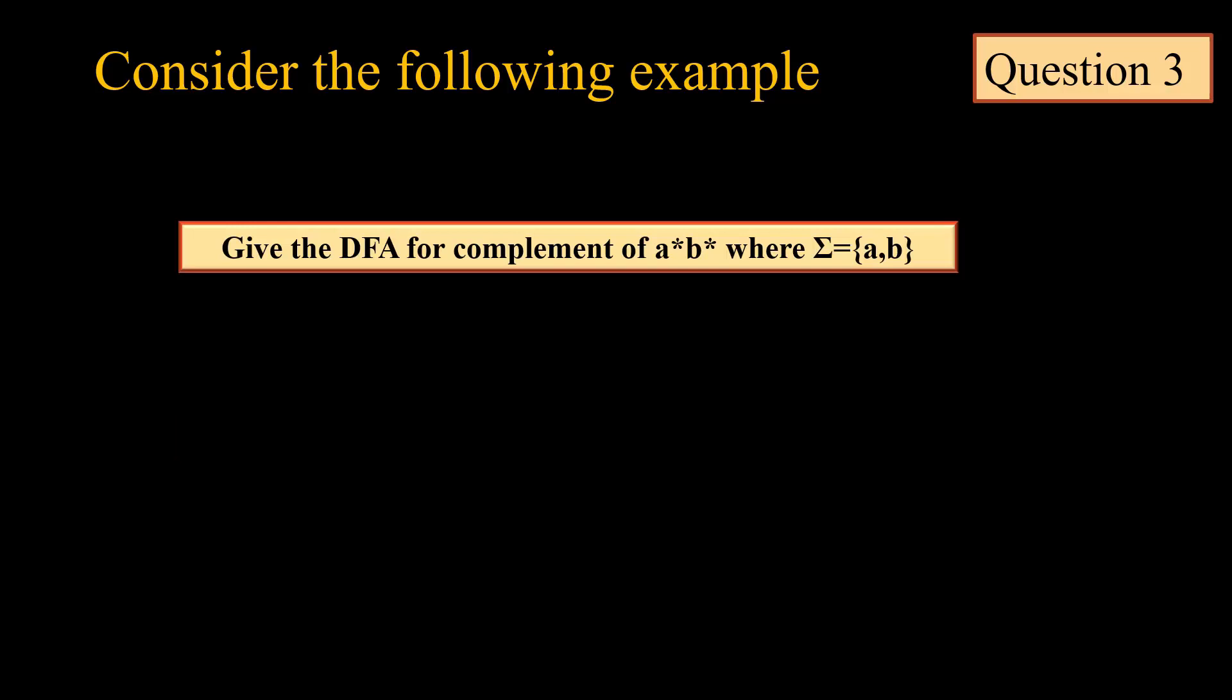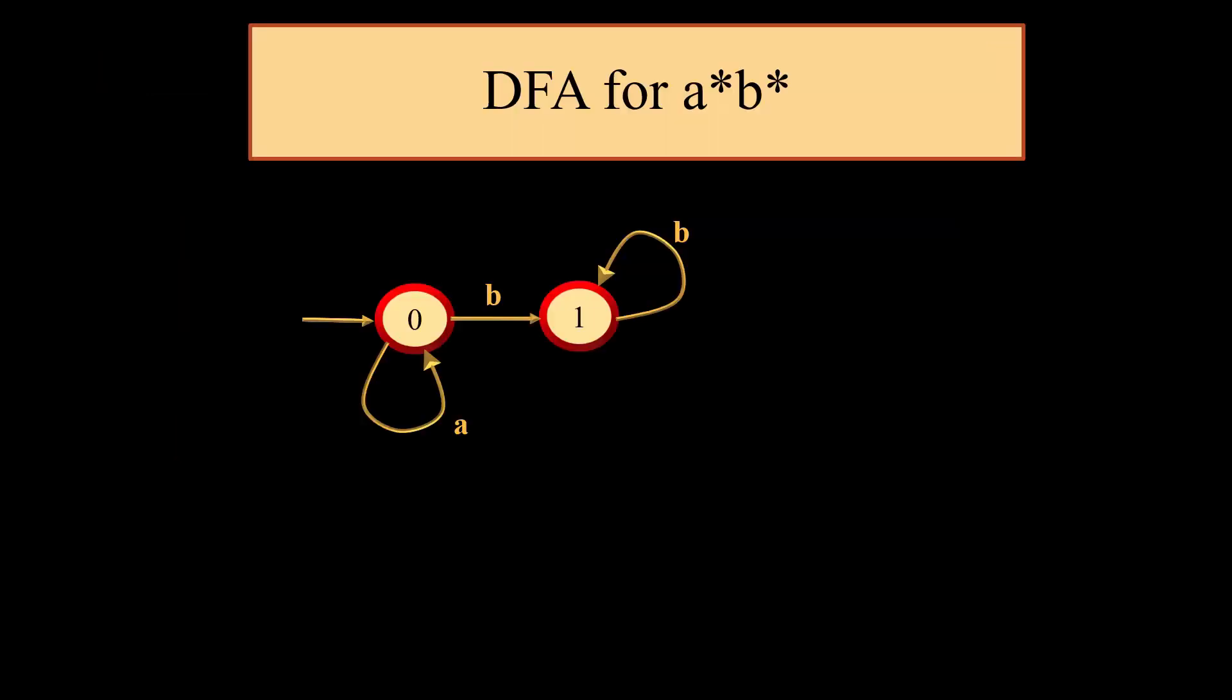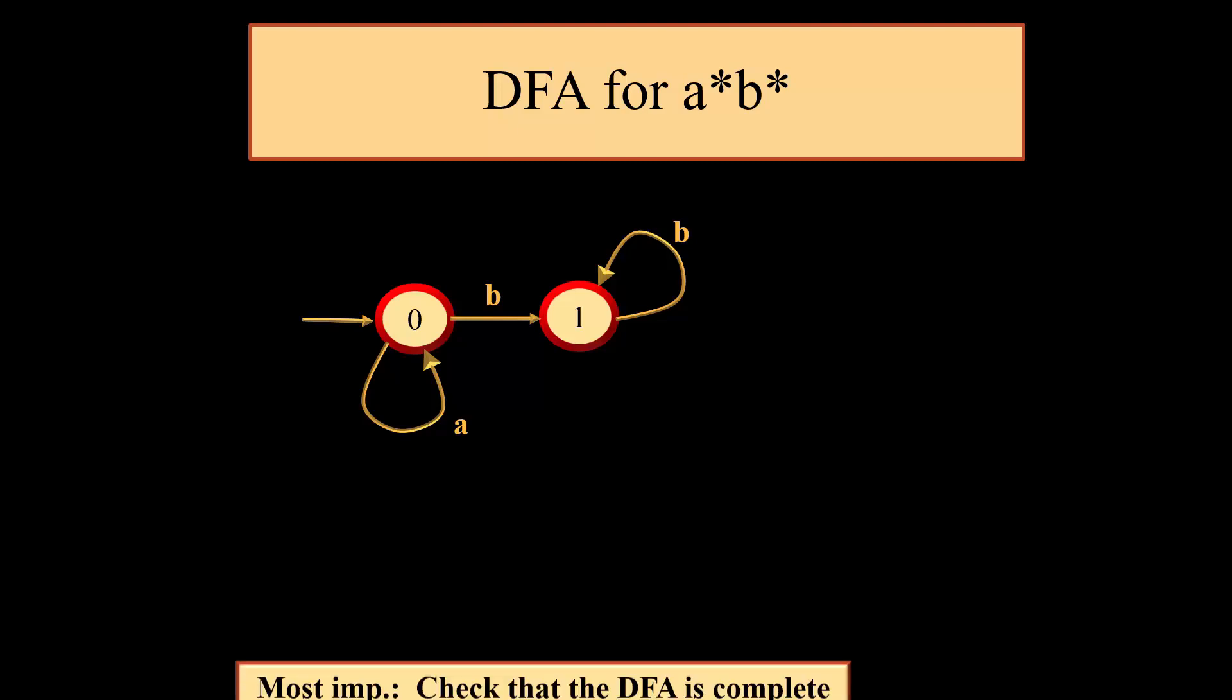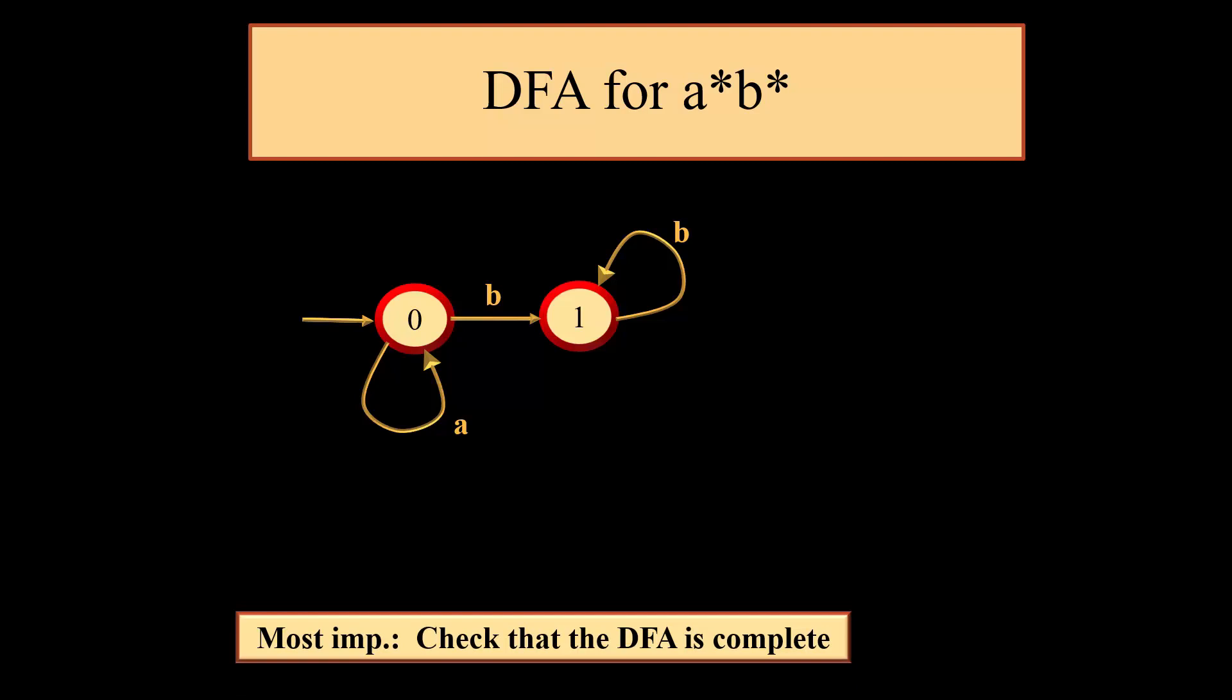Third question says that we need to find the complement of A star B star. We will initially draw the DFA corresponding to A star B star. In this we can clearly see that for 0 we have two moves, one from A one from B, so 0 state is complete. And one state has only one move, that is for B; it does not have any move for A.